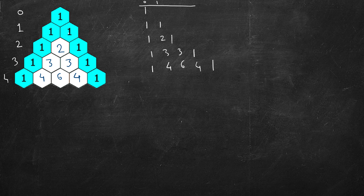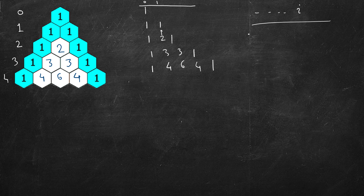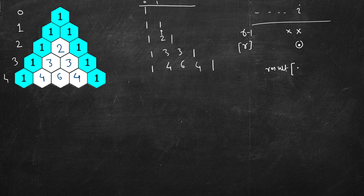Instead of saying it's the sum of two blocks above it, we can say it's the sum of the number immediately above it and previous to it. If this is the i-th column and we're in row r, we take the i-th value from row r minus one and add the previous value. So we replace the current value in place by adding the previous value to it.